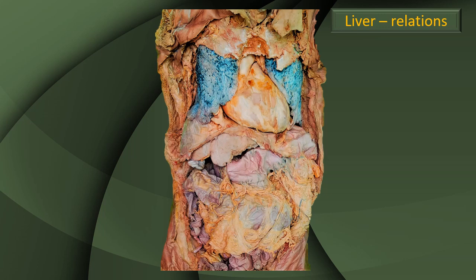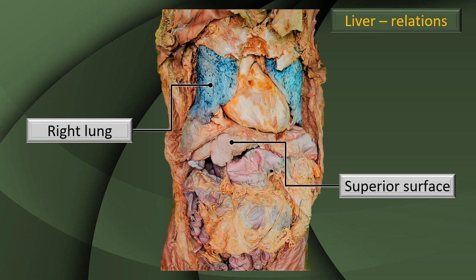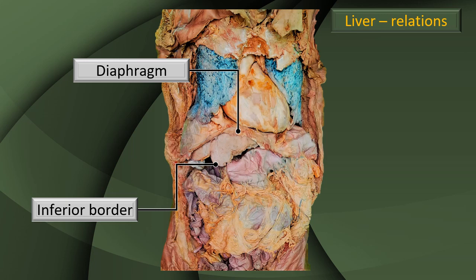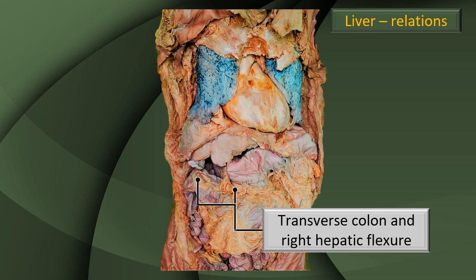Here is a specimen from the torso of the cadaver — the anterior abdominal wall and corresponding anterior thoracic wall have been removed. You can see more or less the same structures shown in the model: the right lung, the superior surface of the liver, the basal surface of the heart, the inferior border of the liver, the diaphragm with its muscle fibers, the stomach immediately to the left and below the liver, and the transverse colon with the hepatic flexure.